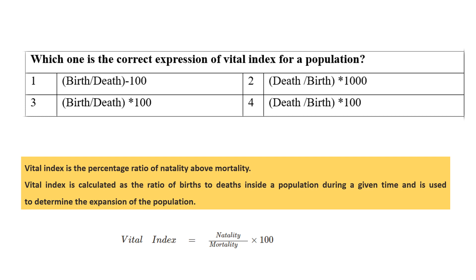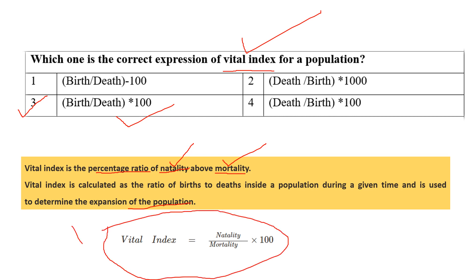Question four: Which one is the correct expression of the vital index for population? The vital index is the percent ratio of natality and mortality. Natality is the birth rate and mortality is the death rate. The vital index is calculated as the ratio of birth to death within a population during a given time, and is used to determine population expansion. The right formula is birth divided by death multiplied by 100, also written as natality divided by mortality multiplied by 100.